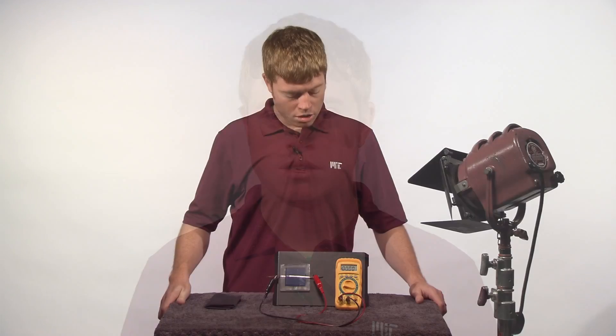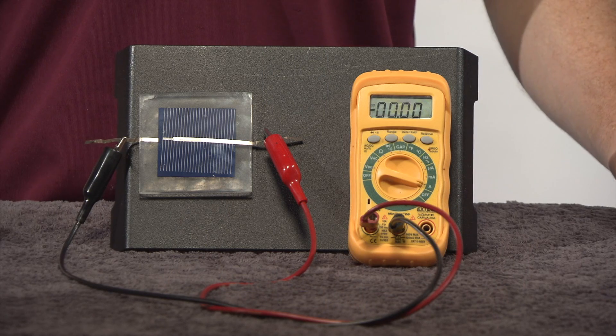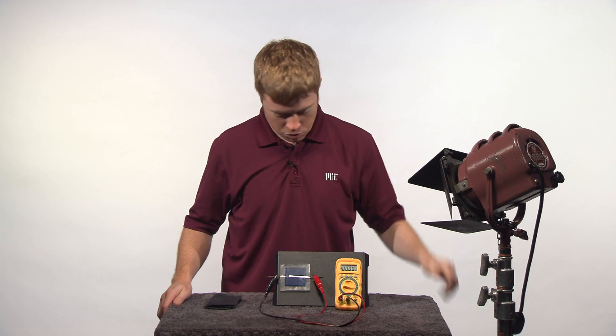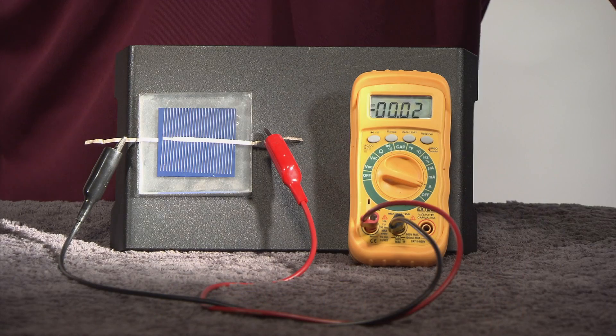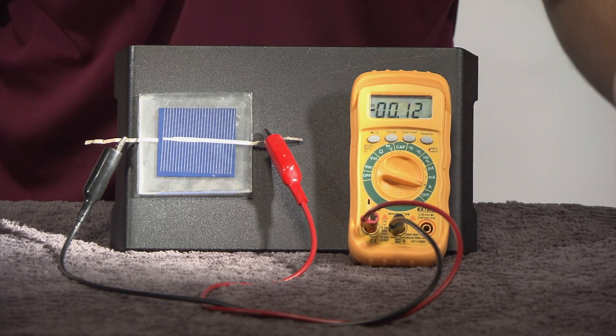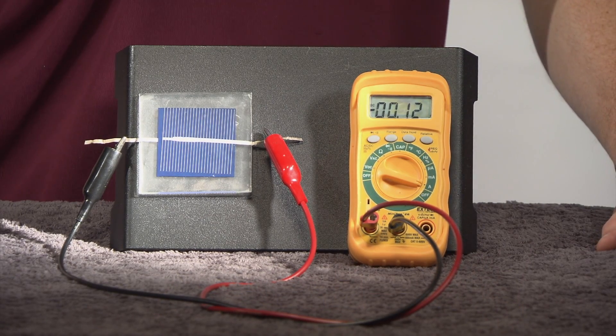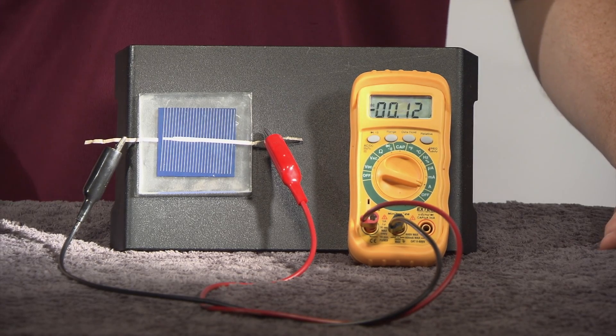Now, let's hook up our solar cell to an ammeter to measure the current. So here we have an ammeter connected to our solar cell and our light source which will simulate the sun. And we can see that if we turn on our light source, we start to read a current flowing out of our solar cell. In this case, about 0.12 amps or 120 milliamps.